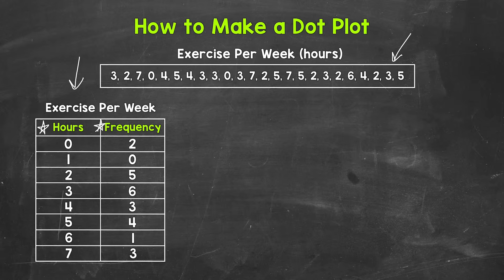So reading the table here, how many people don't exercise at all? Zero hours. Well, two people. How about one hour? Well, zero people. Two hours, five people. Three hours, six people. Four hours, three people. Five hours, four people. Six hours, one person. And then seven hours, three people.